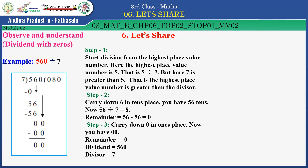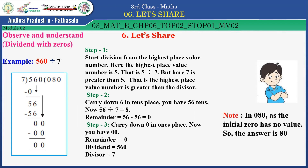Okay children, here you got dividend 560 and divisor 7. Look at this note: the quotient is 0, 8, 0. As the initial 0 has no value, the answer is 80. Here, in the initial place, 0 is there — that 0 has no value. So how do we read it? Yes, 80. Quotient is 80. Very good, children.